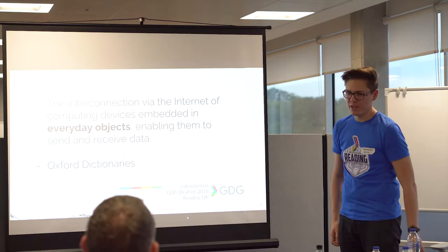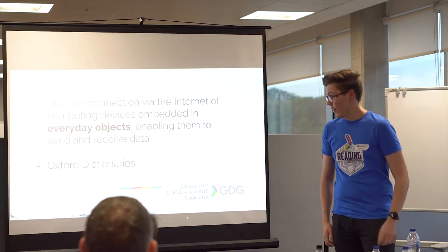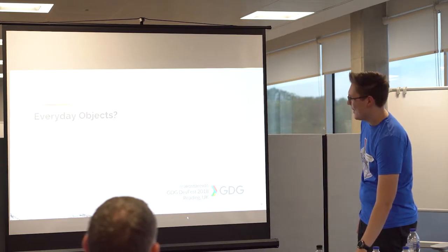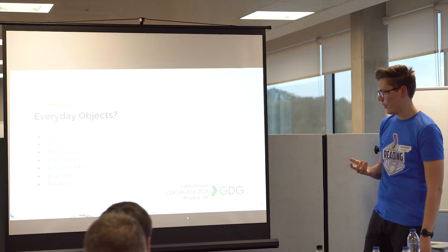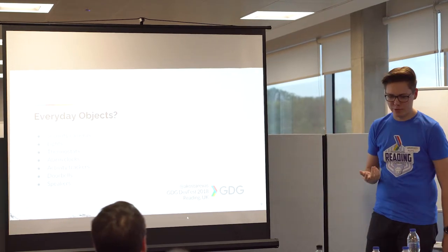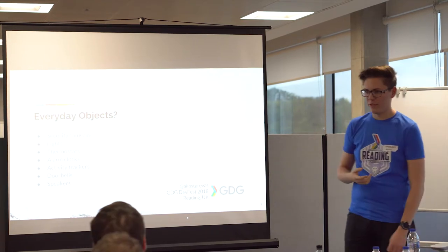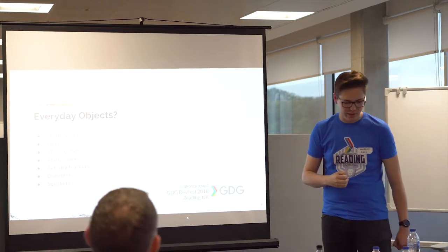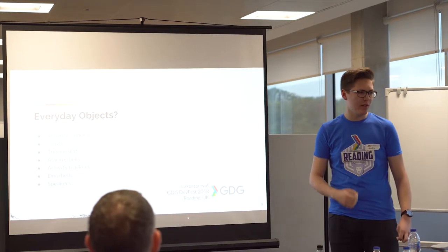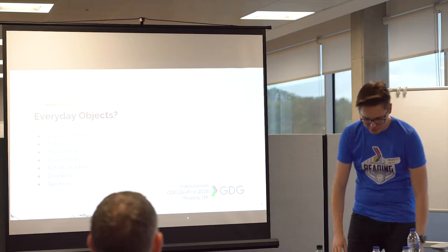Let's start off with everyday objects. I've come up with a couple of normal ones I would see in my everyday life — things that some companies have done something with. Security cameras — Nest Cam has indoor-outdoor solutions. Lights — Philips Hue smart lights you can turn on and off via the Google Assistant. Thermostats — Nest did it again. Alarm clocks — the Amazon Echo Spot is technically an alarm clock. Activity trackers — Fitbit, Wear OS by Google. Doorbells — so many companies do wireless doorbells.